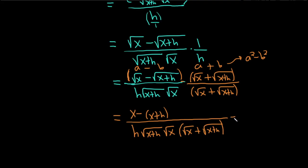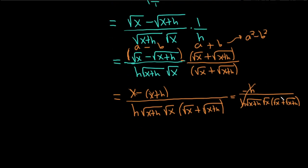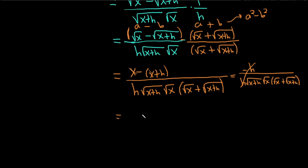Now the x's cancel in the numerator leaving negative h, and the h's cancel with the h in the denominator. We are left with negative 1 over square root of x plus h, times square root of x, times the quantity square root of x plus square root of x plus h.